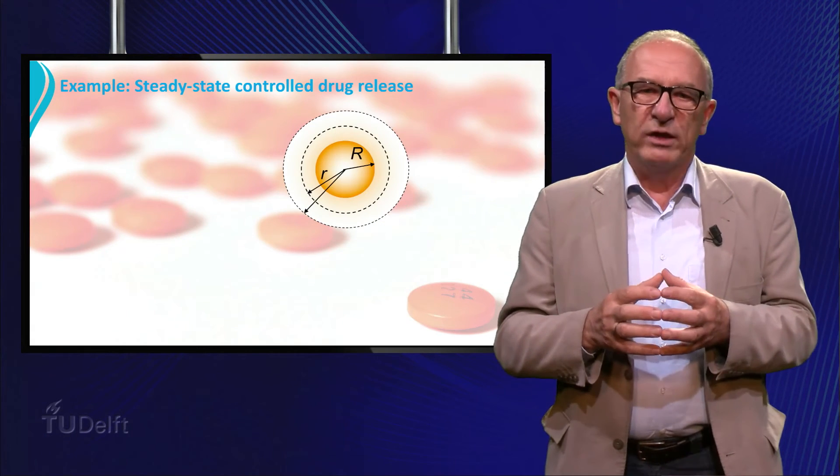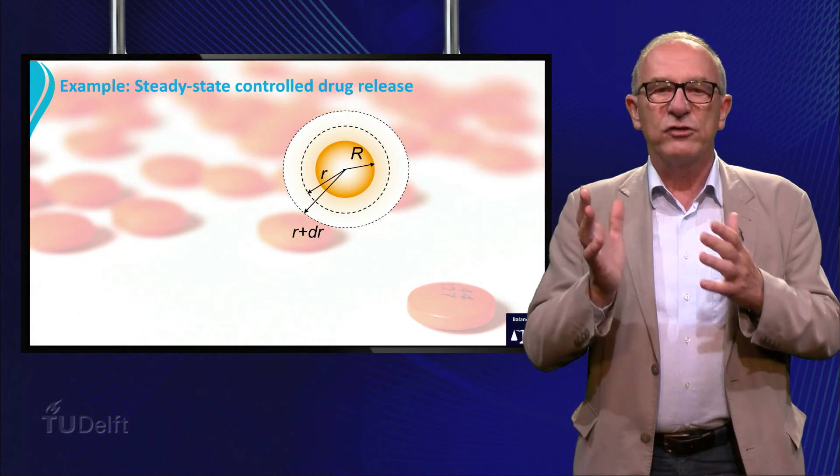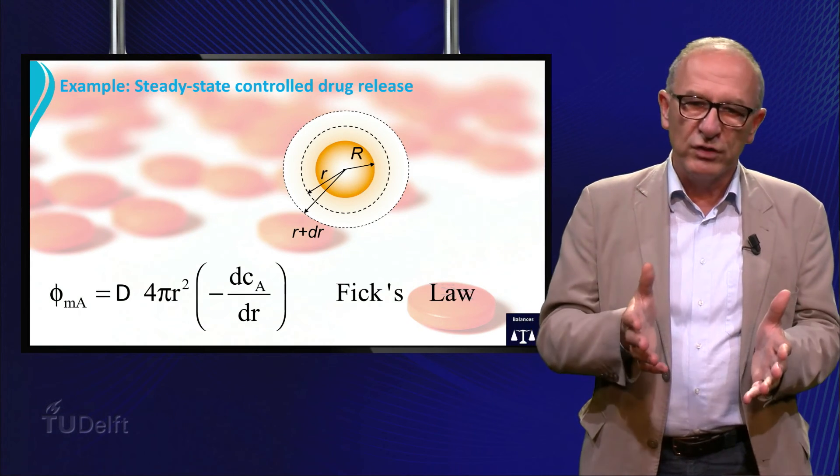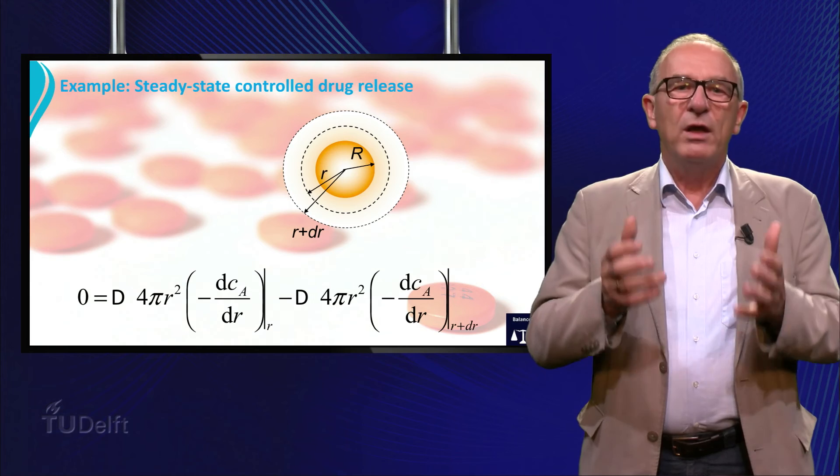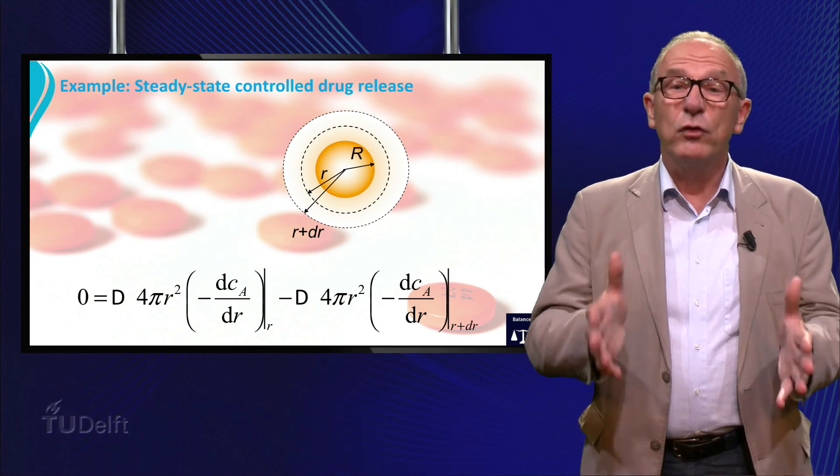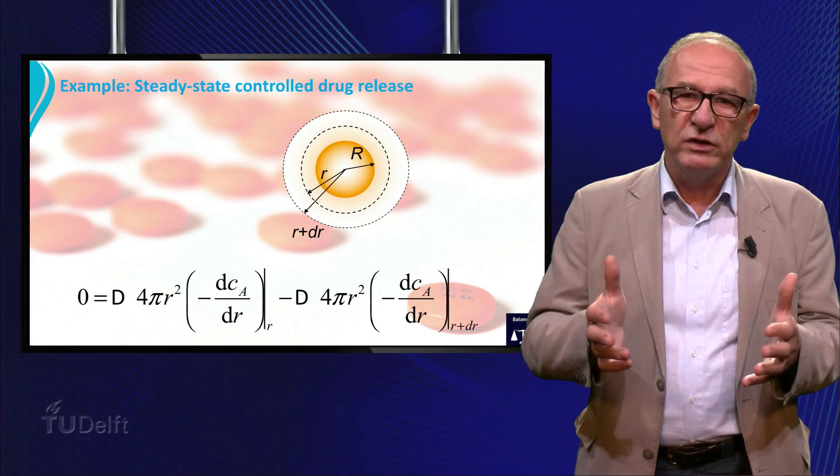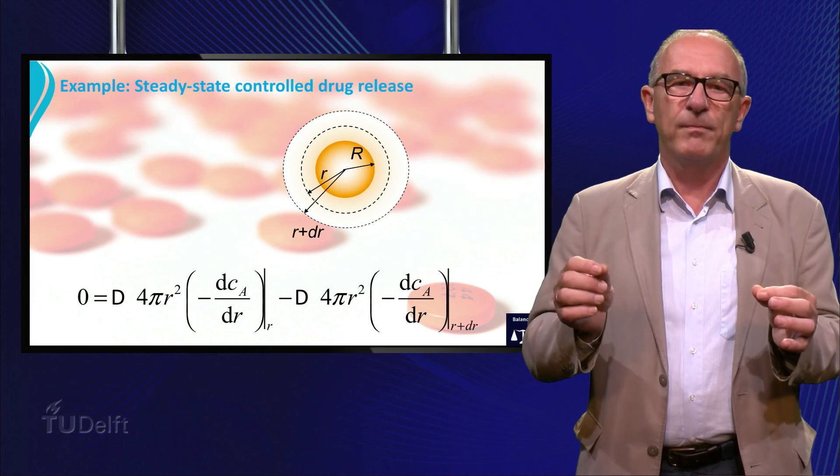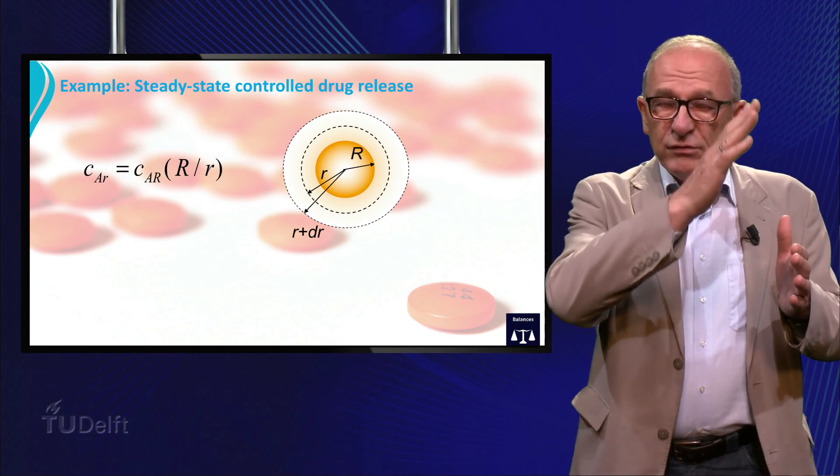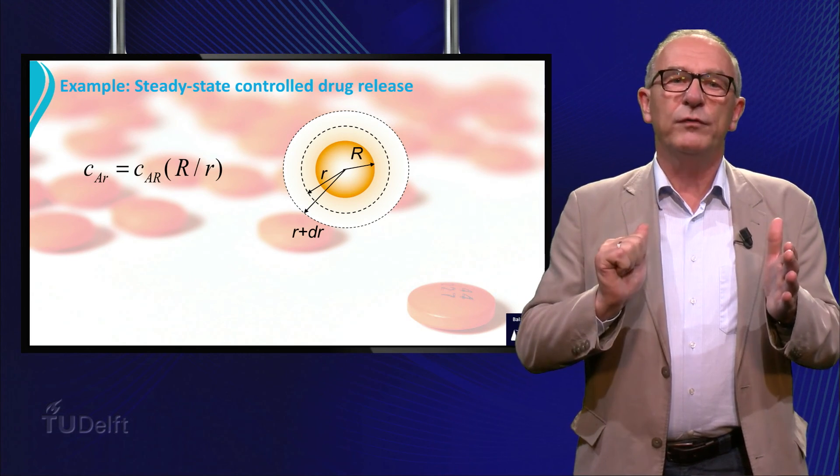Apply a microbalance between R and R plus dr and assume only Fickian diffusion. This results in, take the limit of dr goes to zero and solve the resulting differential equation and look if you obtain the same result as I. You see that the local concentration decreases with the reciprocal value of the distance.